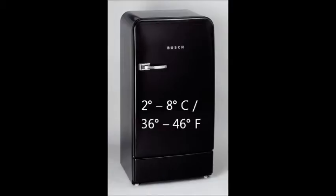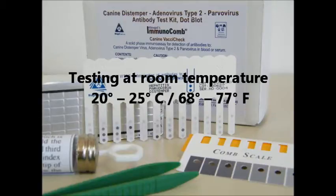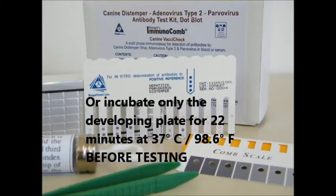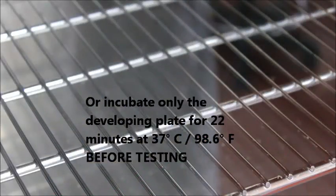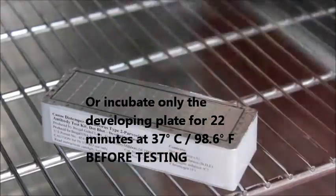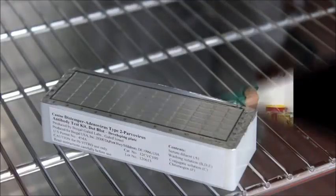Before conducting the test, ensure that all the kit elements and the specimen to be tested are at room temperature for at least 60 to 120 minutes before you actually test. You can speed up this process if you incubate only the developing plate for 22 minutes at 37 degrees Celsius or 98.6 degrees Fahrenheit.